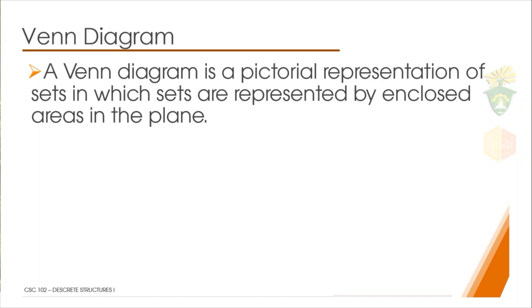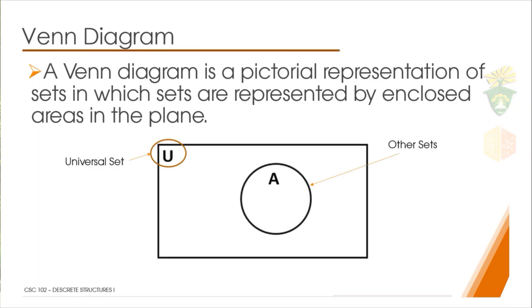So an example of a Venn diagram looks like this. We have here a plane which is a square, and the square is represented as the universal set.